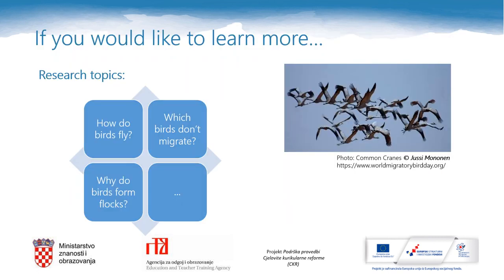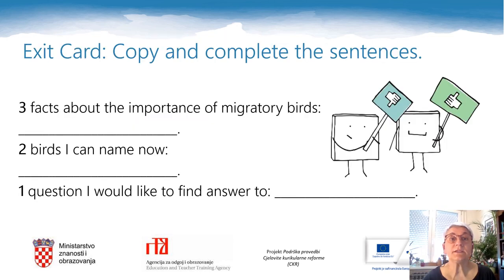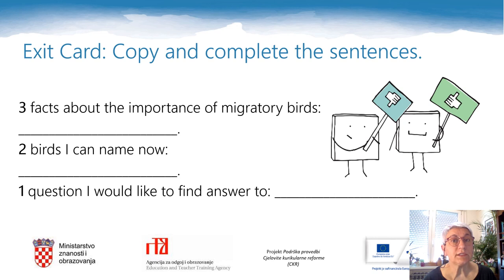I hope you liked the topic of birds and that you would like to learn more. If you would like to learn more, here are some research topics for you: How do birds fly? Which birds don't migrate? Why do birds form flocks? You can do some research, learn more, and report about what you have learned to your teacher and your classmates. The last activity in today's lesson is your exit card. Please pause this video, copy the sentences that you can see on this screen, and complete the sentences in your notebook. Write three facts about the importance of migratory birds that you have learned in this lesson. Then name two birds that were mentioned in today's lesson. And finally, write one question that you would like to find an answer to.